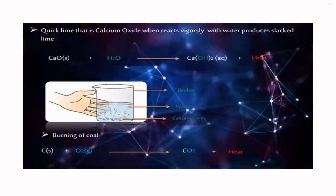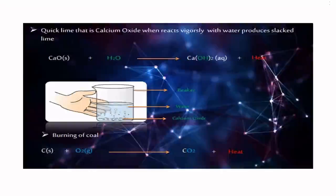Quick lime, that is calcium oxide, when reacts vigorously with water produces slaked lime. CaO (calcium oxide) + H2O (water) gives Ca(OH)2 plus evolution of heat. Then, carbon plus oxygen gives carbon dioxide, that's also an example.